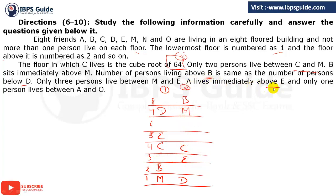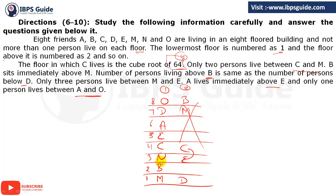A lives immediately above B. In case 1, A can be placed immediately above B on the 3rd floor. In case 2, immediately above B is already C, so case 2 is eliminated. Only 1 person lives between A and O — O cannot be lower than A, so O goes on the floor with 1 person between them above A. The only person left is N, who fills the remaining floor. This is our final formation.